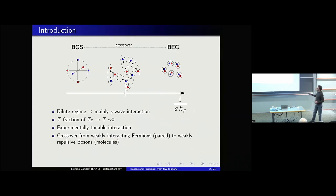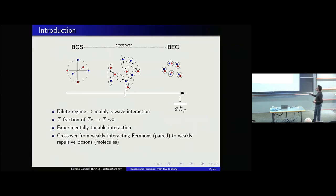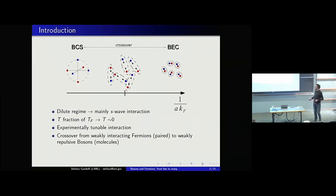Just an introduction. This is a scheme of the unitary gas as a function of the inverse of the scattering length, which is well known as a very popular topic in the last decade or so. By tuning the interaction, we have a crossover from a system in the BCS regime — where fermions are paired on the Fermi surface, weakly interacting — then going to the very strongly interacting regime known as the unitary limit when the scattering length diverges. Then, by further increasing the interaction strength, the fermions eventually form molecules that behave like a weakly interacting Bose gas. It is possible to realize these systems in a very dilute regime.